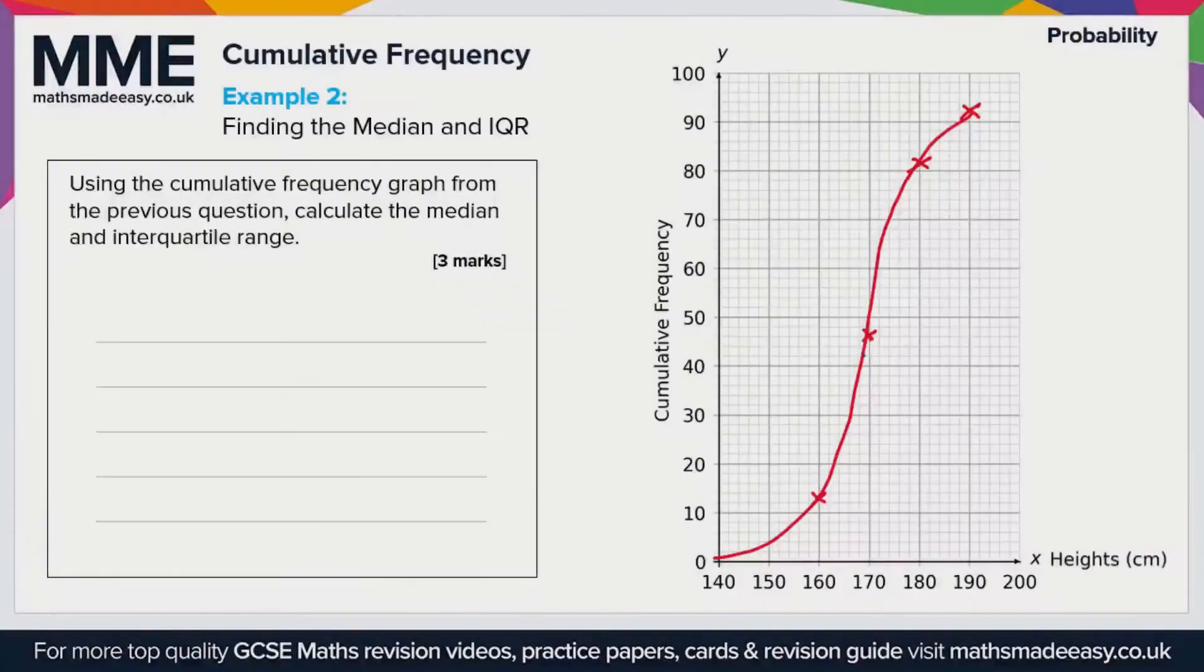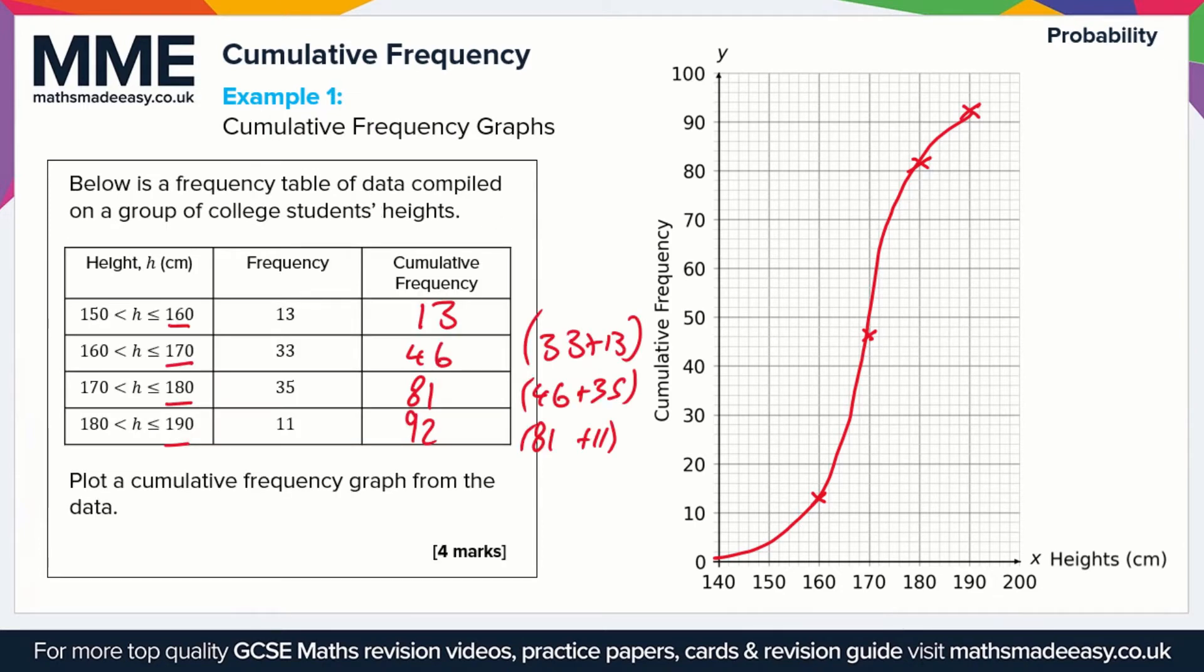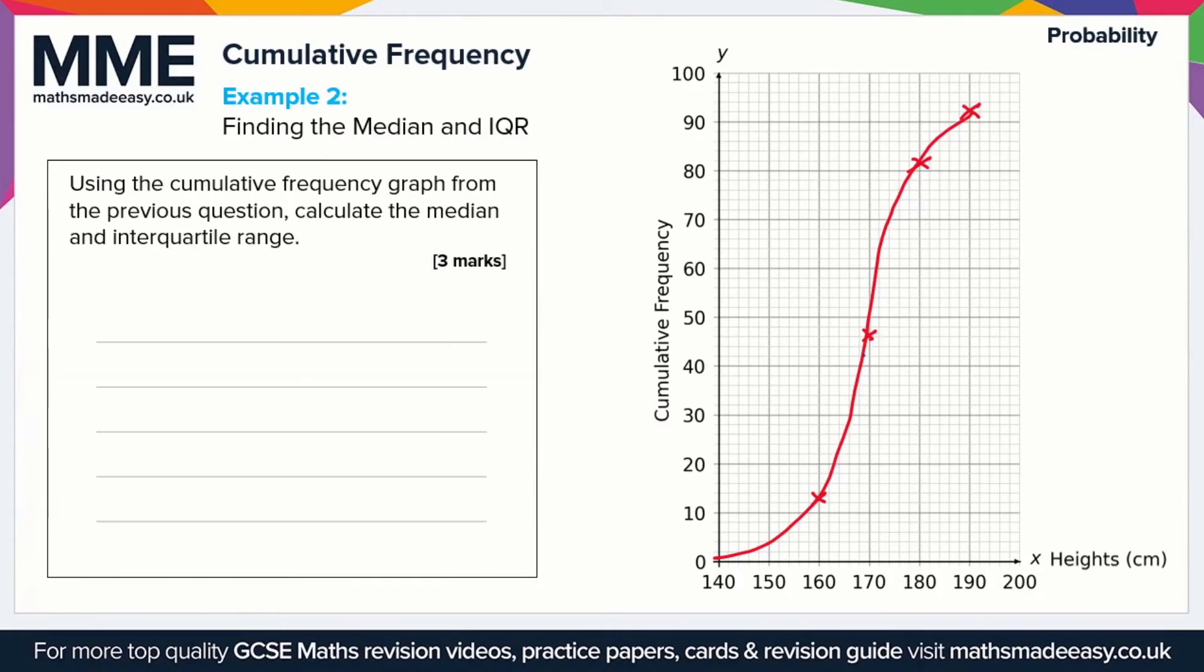Moving on to this next part, we have to use our cumulative frequency graph from the previous question. I've just copied it in here. We have to calculate the median and the interquartile range. If we just flick back to the previous example, the last value for the cumulative frequency was 92, so that means our total number of values is 92, we'll call it n.